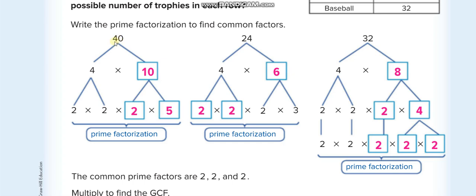For 40, you break it into two numbers — say 4 times 10, or 2 times 20, it depends on you, you'll get the same result. Then you break 4 into 2 times 2, and 10 into 2 times 5. Since those can't be broken down further, this is the prime factorization of 40.